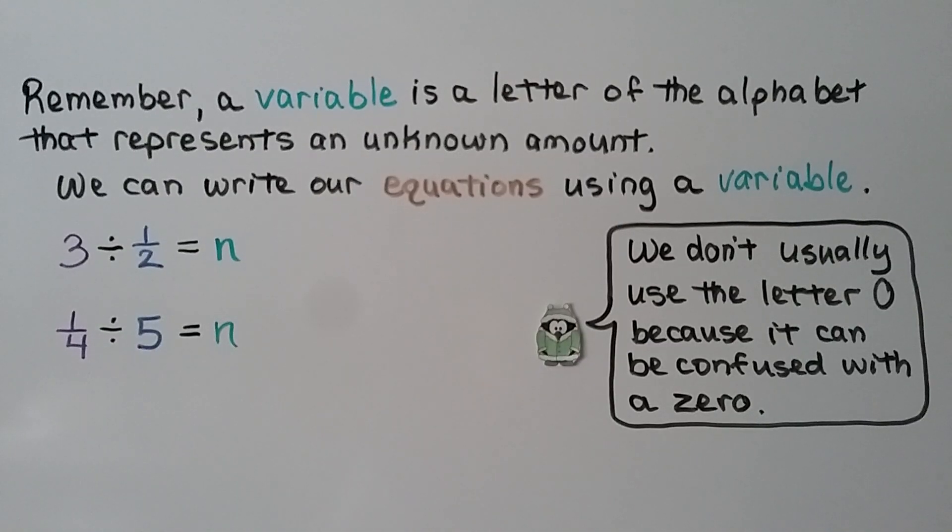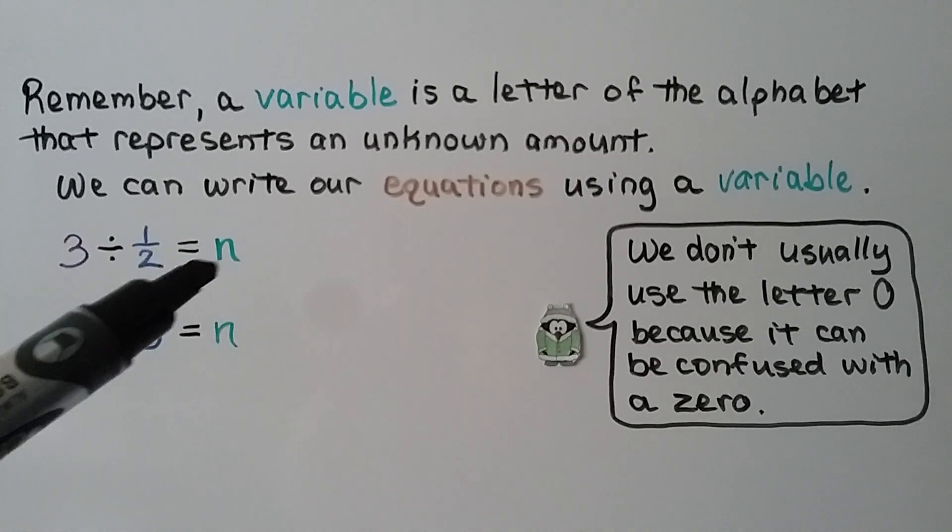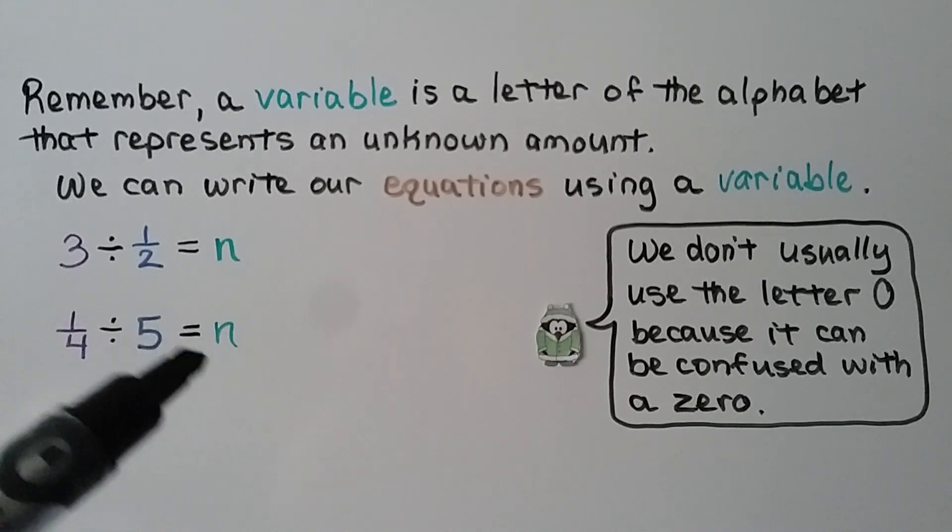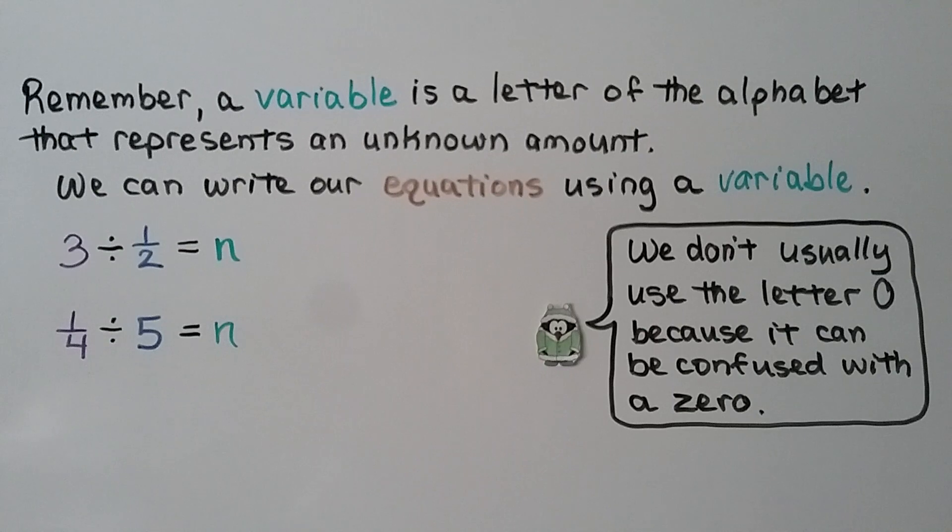And remember, a variable is a letter of the alphabet that represents an unknown amount. We can write our equations using a variable. We can write 3 divided by 1 half is equal to n. Or 1 fourth divided by 5 is equal to n. We could use an x, a p, an m. We could use any letter of the alphabet, really. We just don't usually use the letter o because it can be confused with a zero.